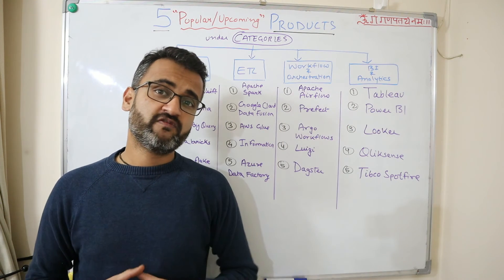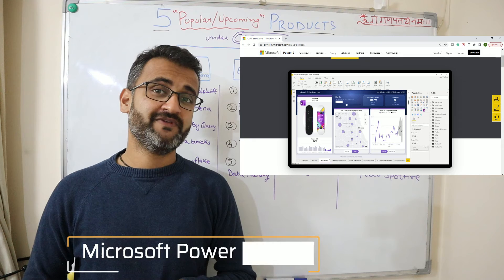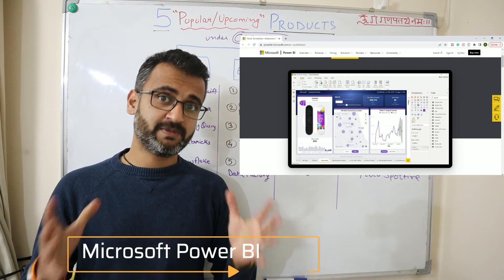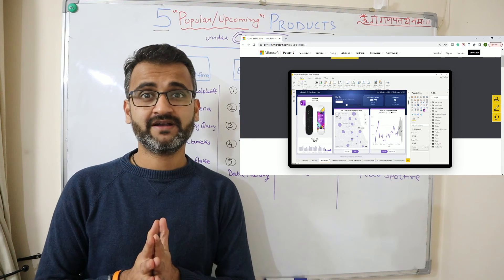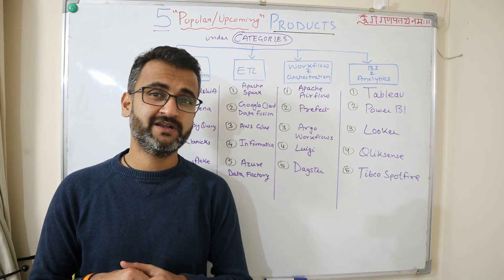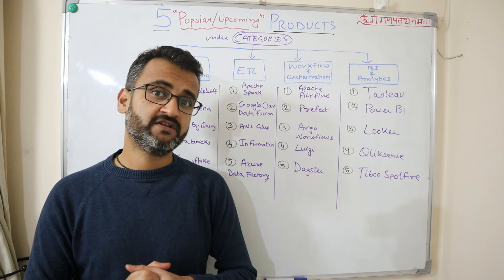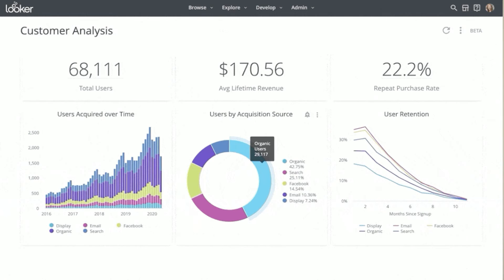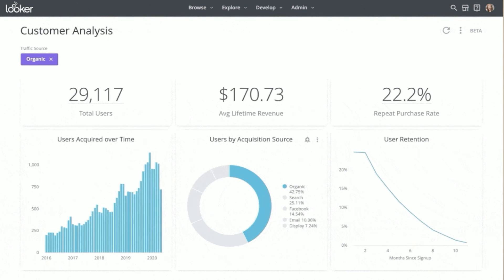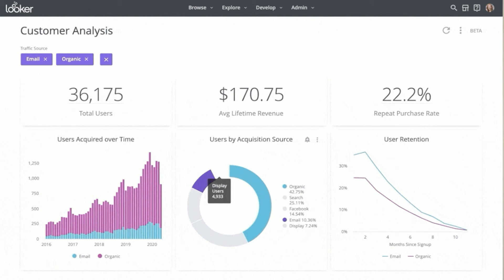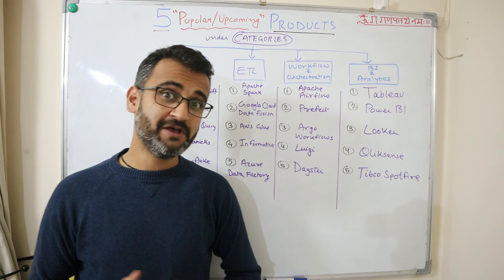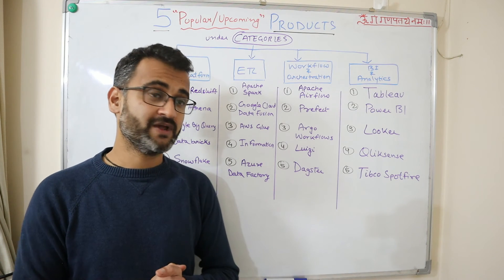Second in the list is Microsoft Power BI. It has also emerged very quickly in this particular space. A very good product. It offers you a lot of flexibility and is a close competitor of Tableau. Looker is Google Cloud's response to all these tools which are coming in the reporting space. Looker was a separate company but again in 2019 it was taken over by Google.